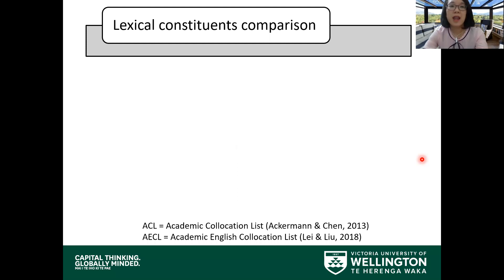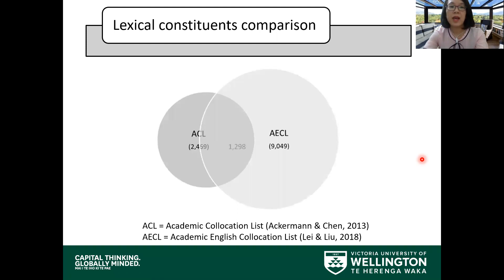First, lexical constituents comparison helps us understand the extent to which the two lists overlap and differ. As you can see from the figure here, the two lists share more than 1,200 items. More than half of the items in the ACL are in the overlapping set, but only a small part of the AECL overlaps with the ACL.